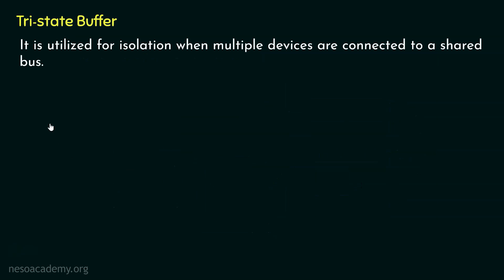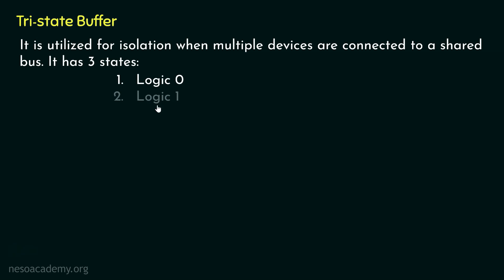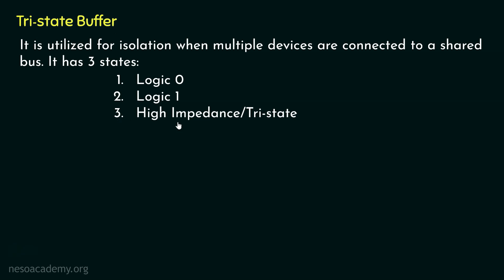The primary utilization of the tri-state buffer is isolation when multiple devices are connected to a shared bus. Before showing that, let me emphasize that the tri-state buffer has three different states. The first state is logic zero, the second state is logic one, and apart from these two it also has another state called the high impedance state. The high impedance state is also known as the tri-state, and thus it got the name 'tri-state buffer.' The third or tri-state is the high impedance state, denoted using capital Z, and sometimes called high-Z.